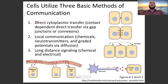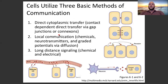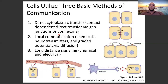There are many methods that your cells utilize in order to communicate and coordinate their activities. There are three main categories they all fall into. Number one: direct cytoplasmic transfer.